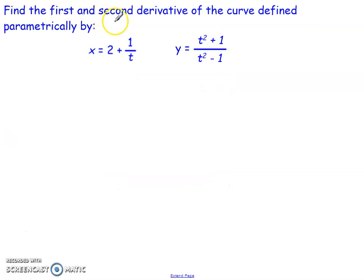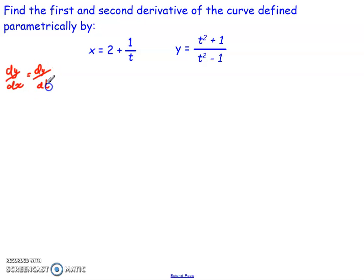So first one: find the first and second order derivative of the curve defined parametrically. The first derivative — remember, dy/dx — is given by dy/dt divided by dx/dt. The shorthand way of saying that is y-dashed over x-dashed. So we need to calculate both of these and plug it all together.